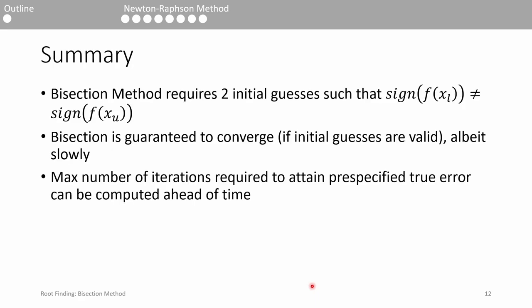To summarize, the bisection method requires two initial guesses which bracket the root. These initial guesses must be made such that the sign of f(x_l) and the sign of f(x_u) are opposite. If so, then the bisection method is guaranteed to converge linearly. Finally, you can calculate an upper bound on the number of iterations it takes to attain a certain true error a priori. See you next time.